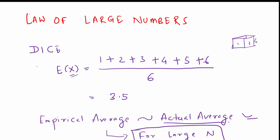Here is a classic example in probability where you are throwing a dice. A dice has 6 faces, so when you throw it, you get a number from 1 to 6. What is the expected outcome? The expected outcome is just the average of the different numbers on the different faces of the dice. Since there are numbers from 1 to 6, the average is 3.5. So the expected outcome is 3.5, which is the theoretical average of this experiment.